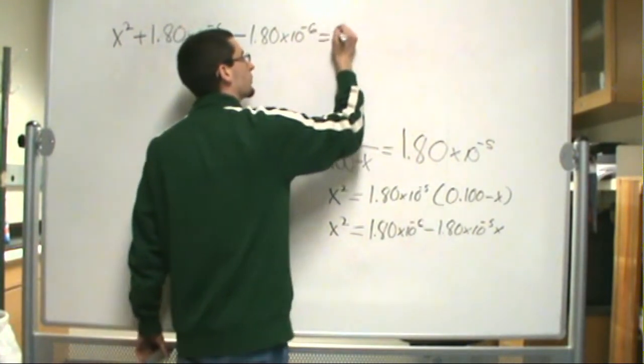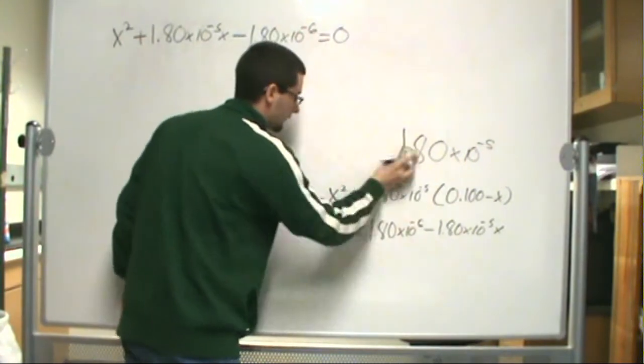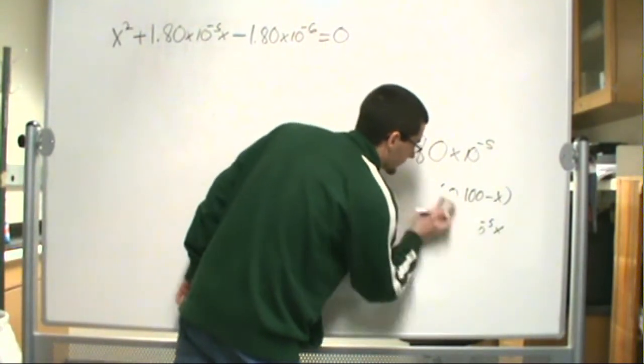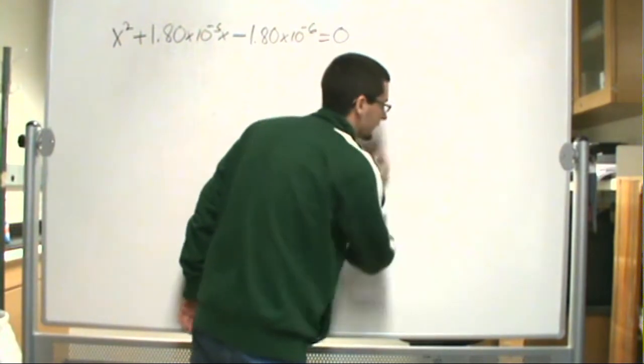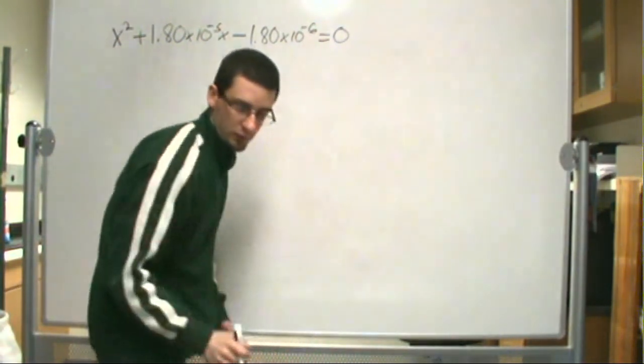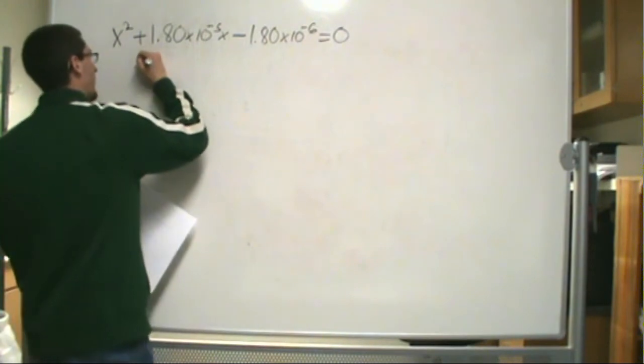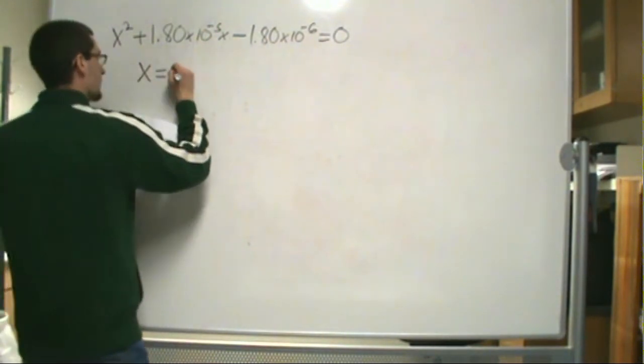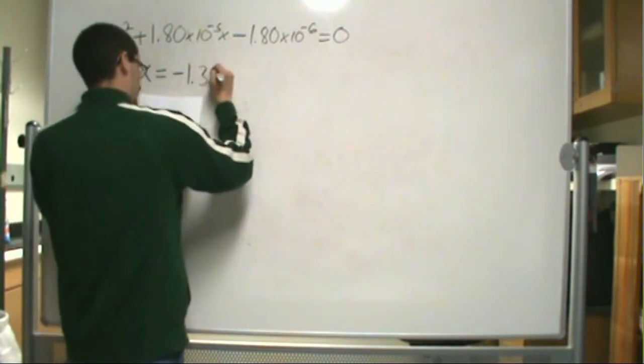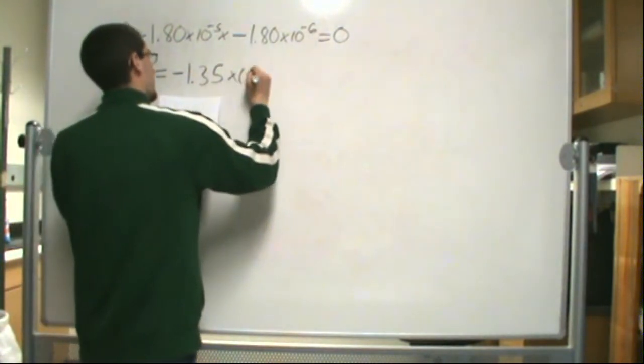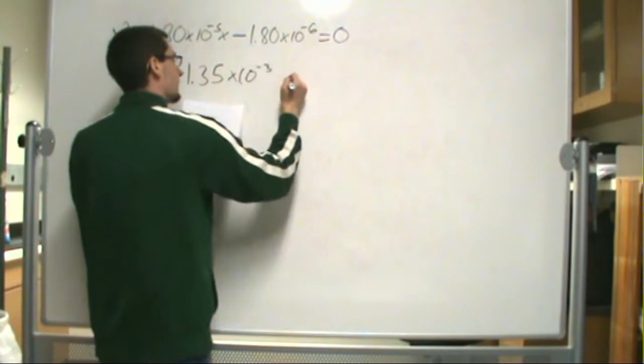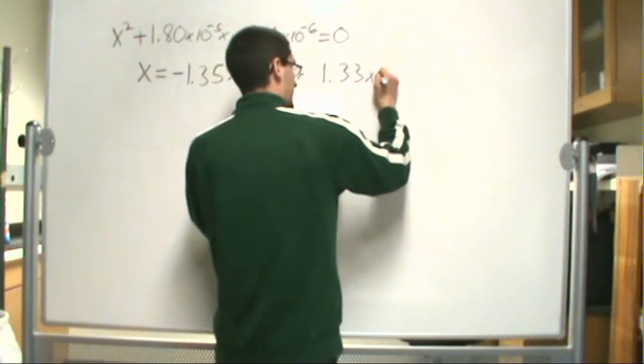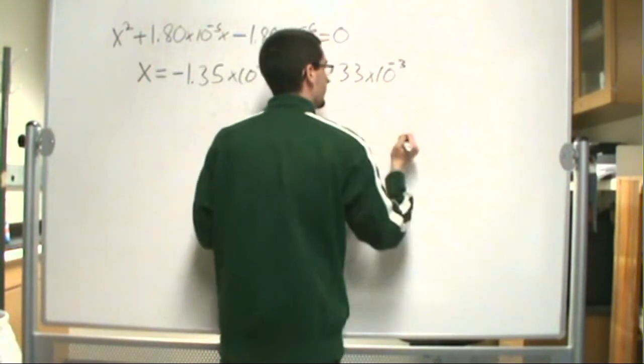So X squared plus 1.80 times 10 to the minus 5th times X minus 1.80 times 10 to the minus 6th is equal to 0. So we can solve our quadratic equation. You can either use your calculator or you can use the formula. I've already done this for us. And you come to a solution that has two answers. So X is equal to negative 1.35 times 10 to the minus 3, or it is equal to 1.33 times 10 to the minus 3 molar.